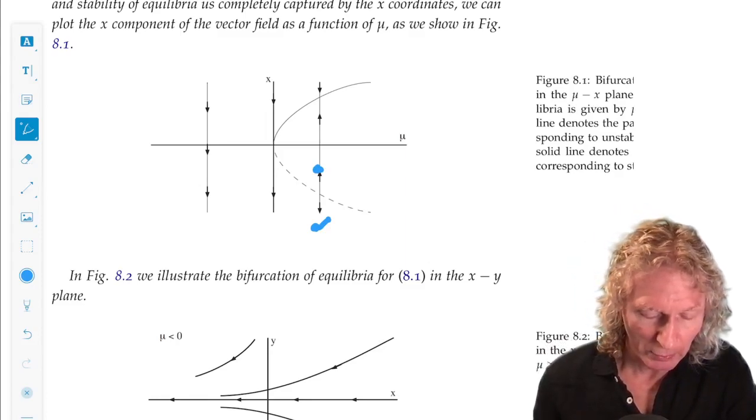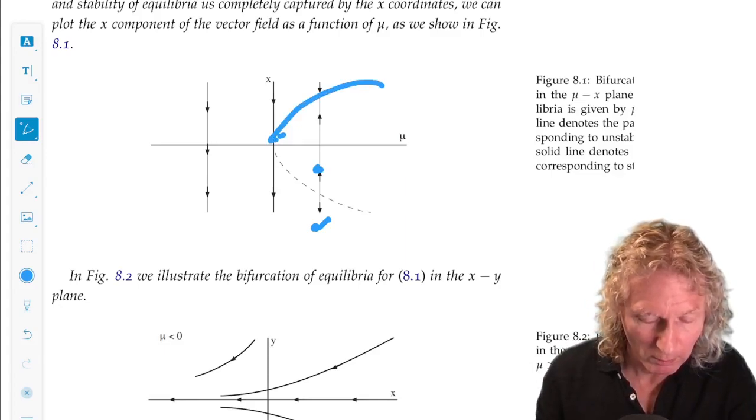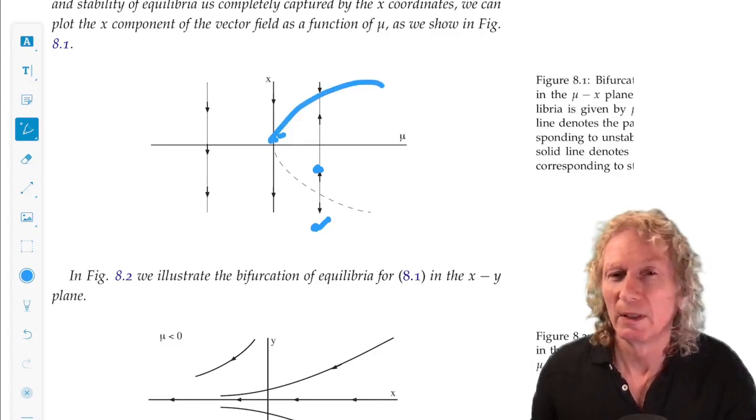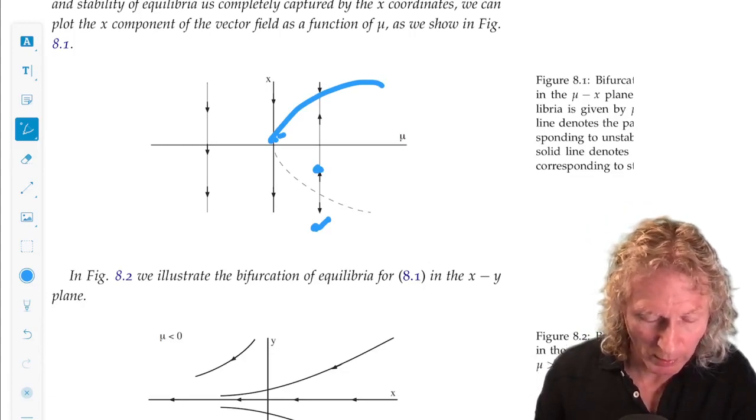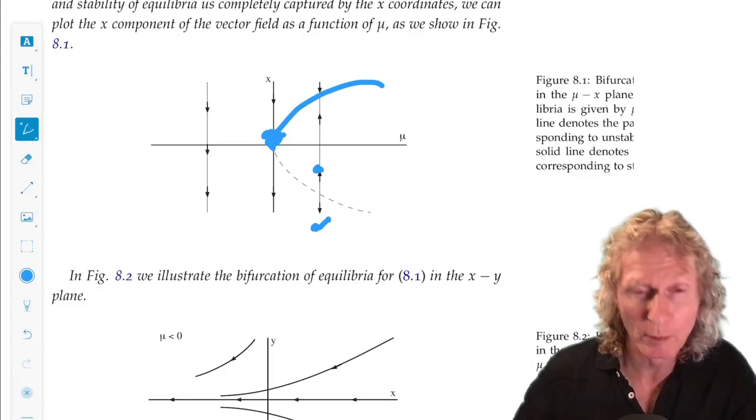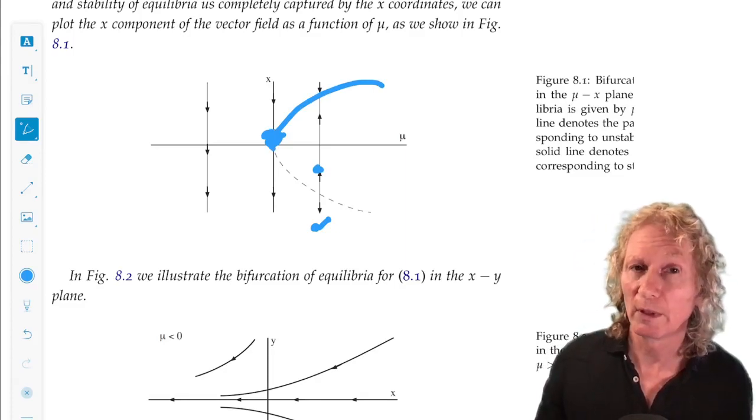But that's fine. You know what your stable branch is. But as you decrease mu, what happens? Danger awaits, because this unstable equilibria collides with the stable one at mu equals zero, and causes it to disappear for mu less than zero.